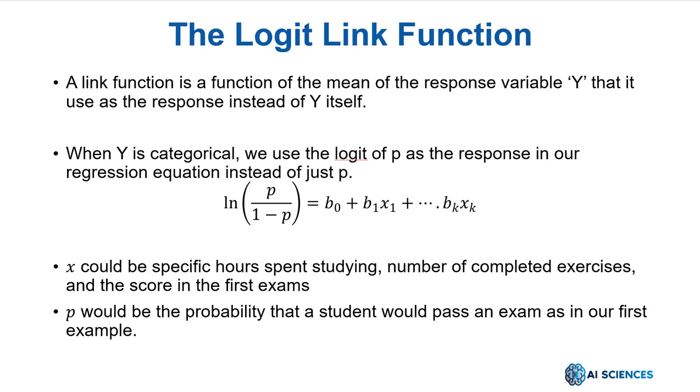A link function is basically a function of the mean of the response variable y that we use as the response instead of y itself. It means that when y is categorical, we use the logit of y as the response in our regression equation instead of just y. The logit function is the natural log of the odds that y equals 1. For mathematical simplicity, we're going to assume y has only two categories and code them as 0 and 1.